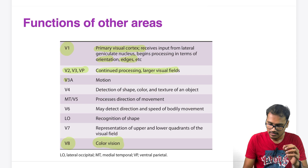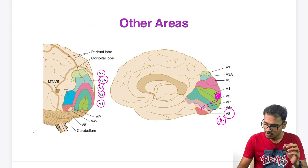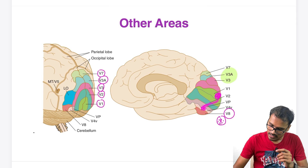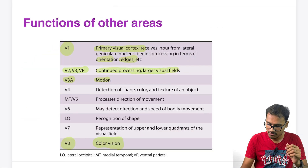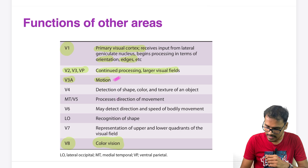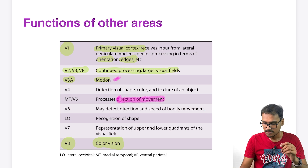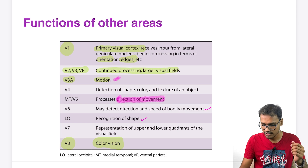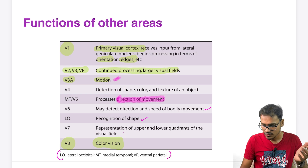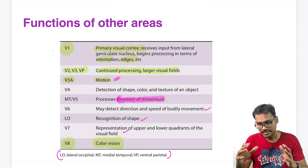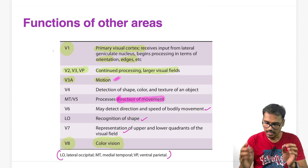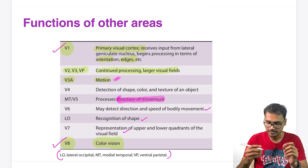V2, V3, and VP (ventral parietal) are for continuous processing and larger visual fields. V3A is for motion. V4 is for shape deduction. MT (medial temporal), along with V5, is for direction detection. V6 also performs deduction, while LO (lateral occipital) is for recognition of shape. V7 is for upper and lower quadrant representation of the visual field.